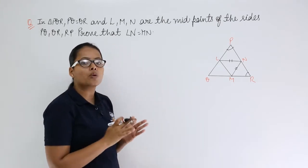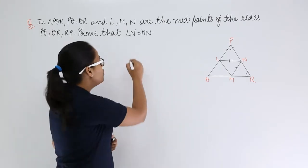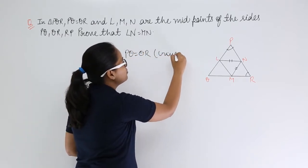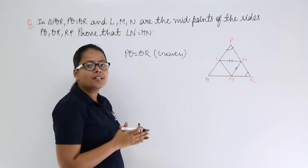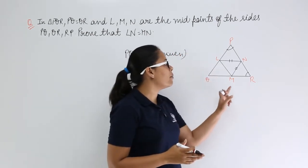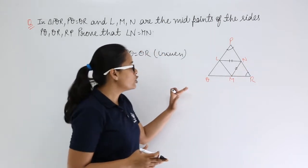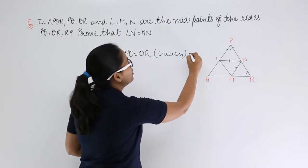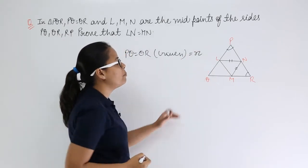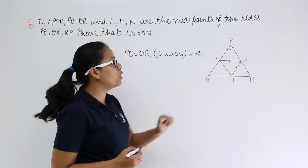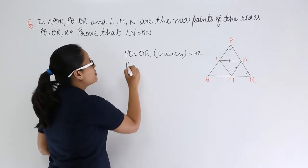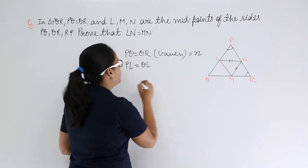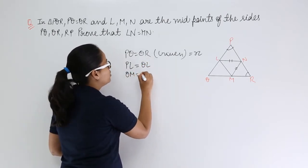First, write down what you have been given. You know that PQ is equal to QR — this is given. L, M, N are the midpoints. Since PQ is equal to QR, let's suppose both equal X. As L is the midpoint of PQ and M is the midpoint of QR, PL equals QL and QM equals MR.